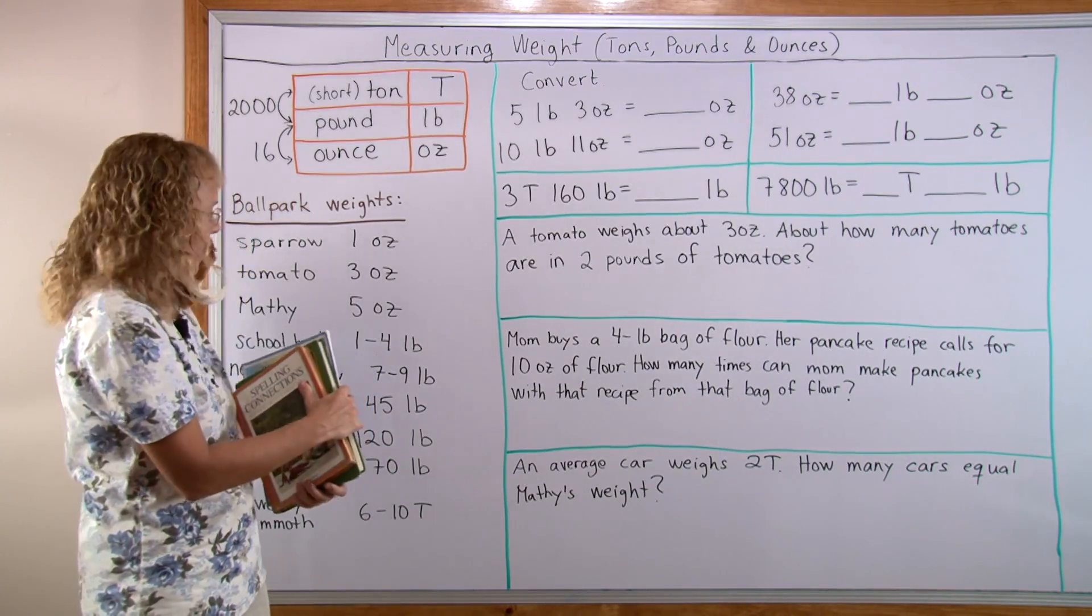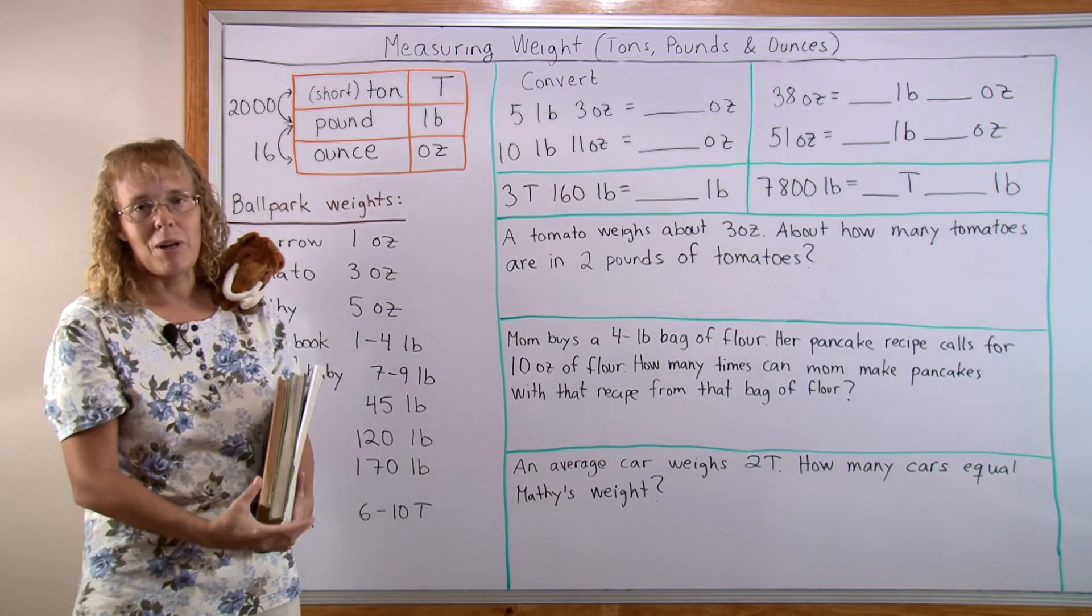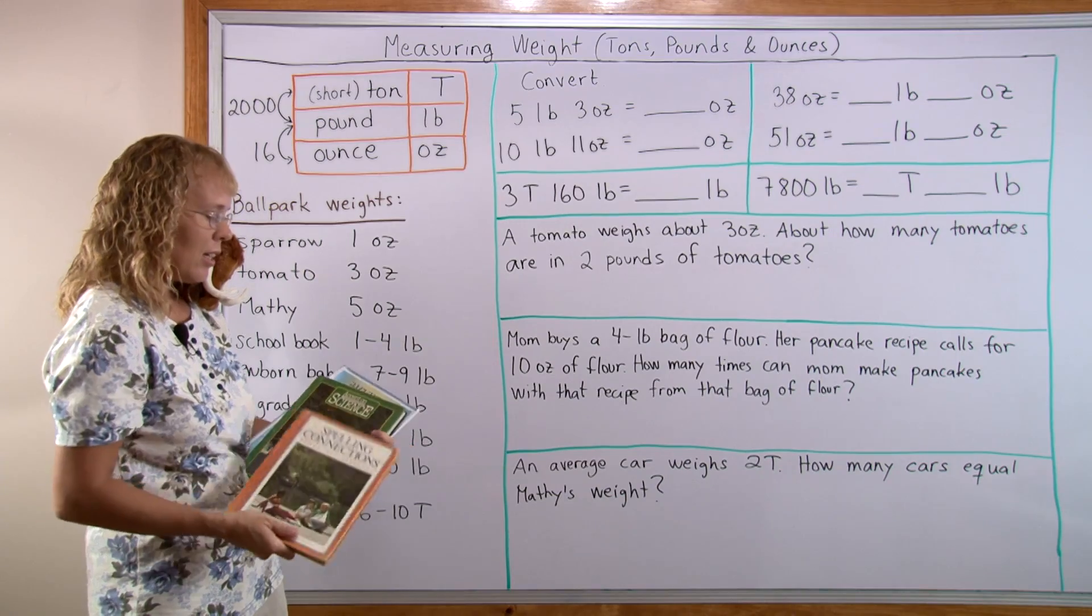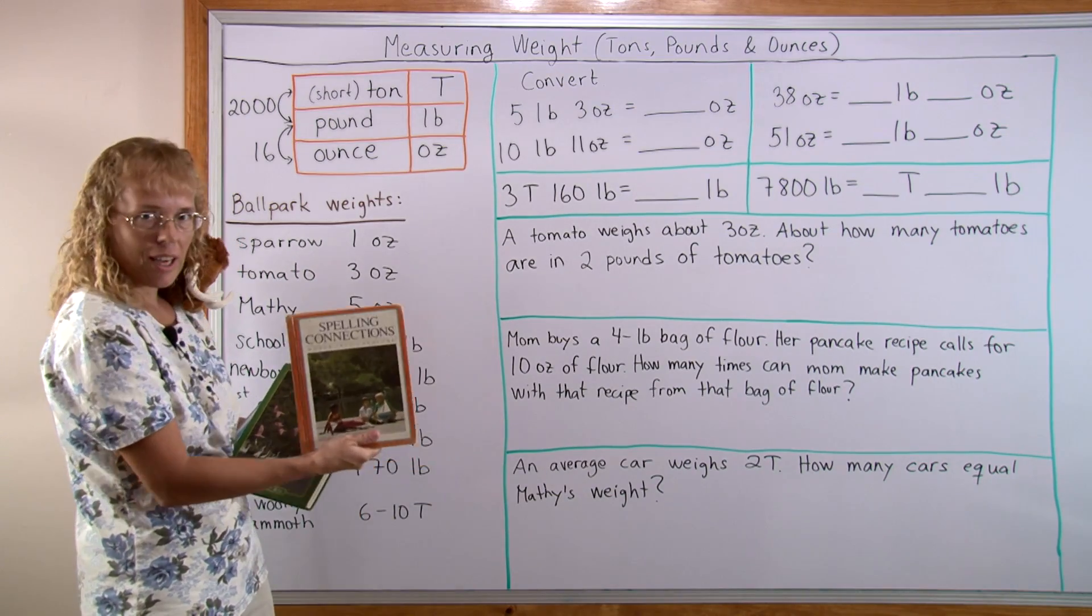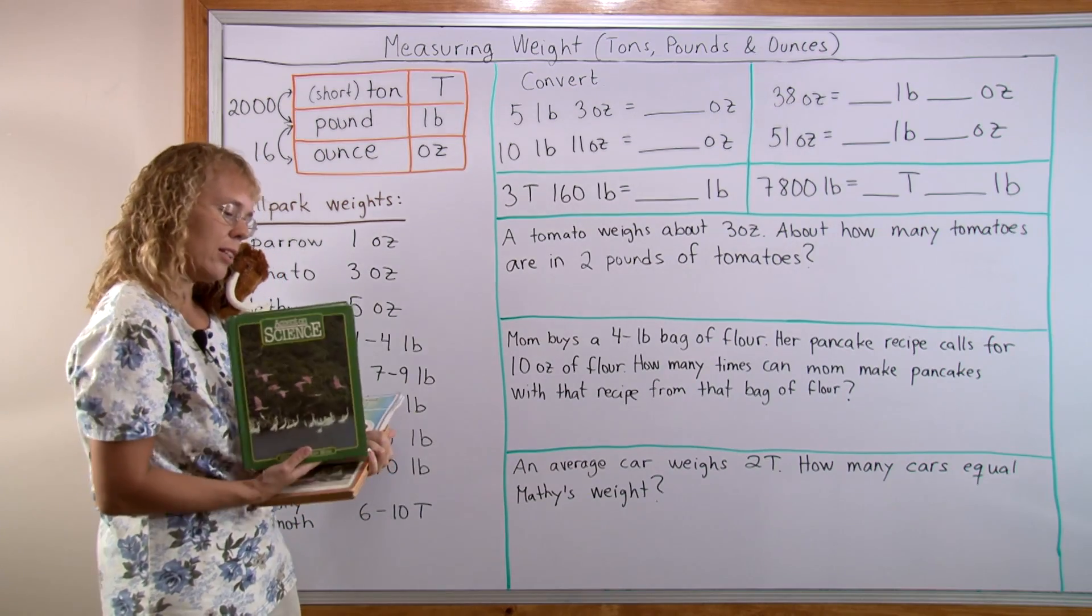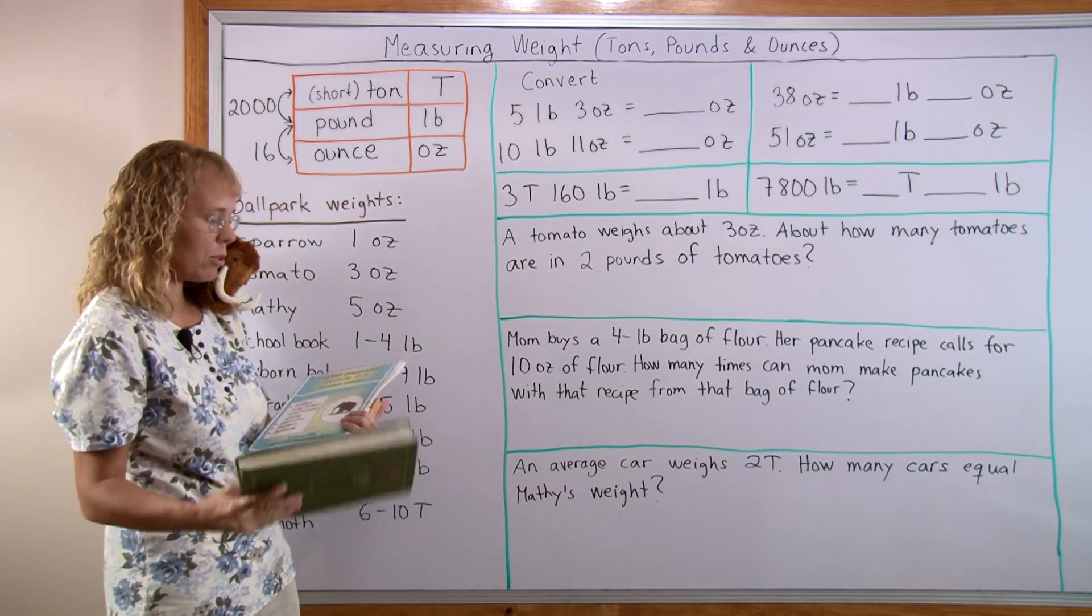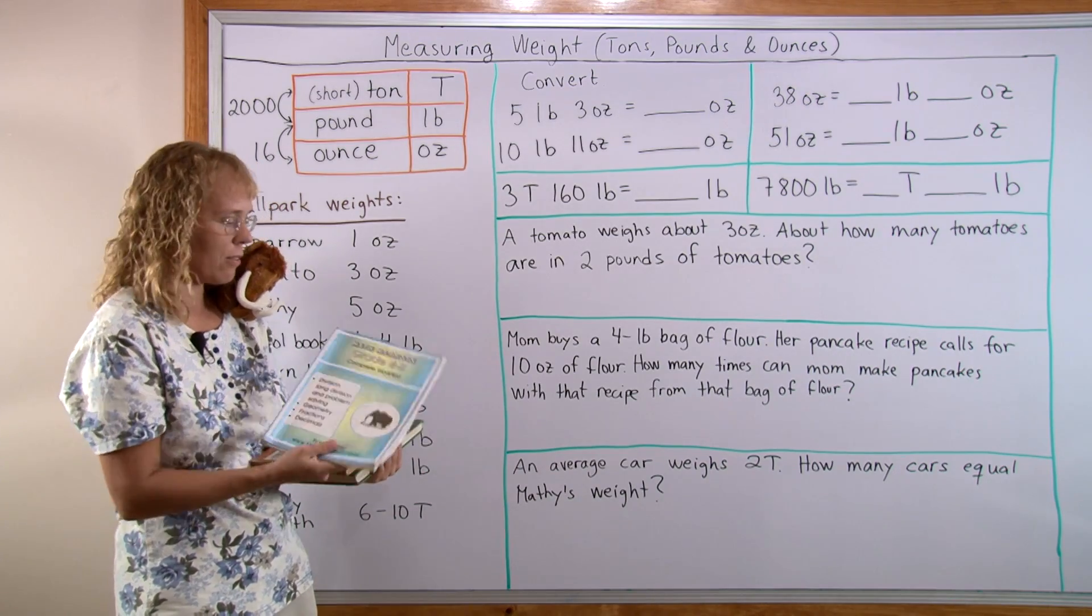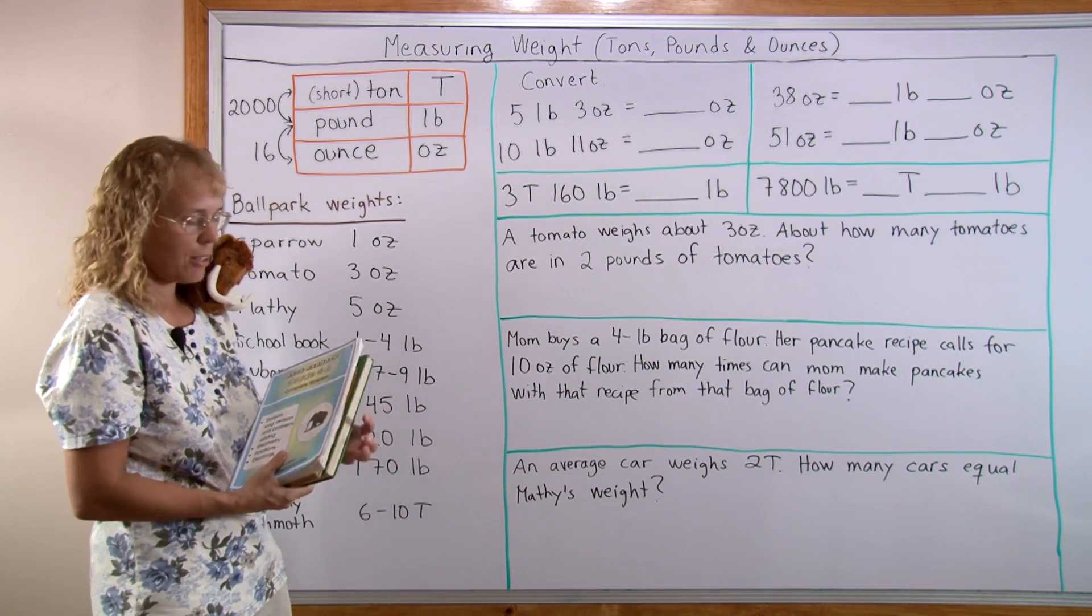Here I have some school books. School books weigh about one to four pounds, could be even more for really heavy high school books. This book is about one and a half pounds. This one is a little heavier, about two and a half pounds. My Math Mammoth book was pretty close to one pound. It's soft cover.